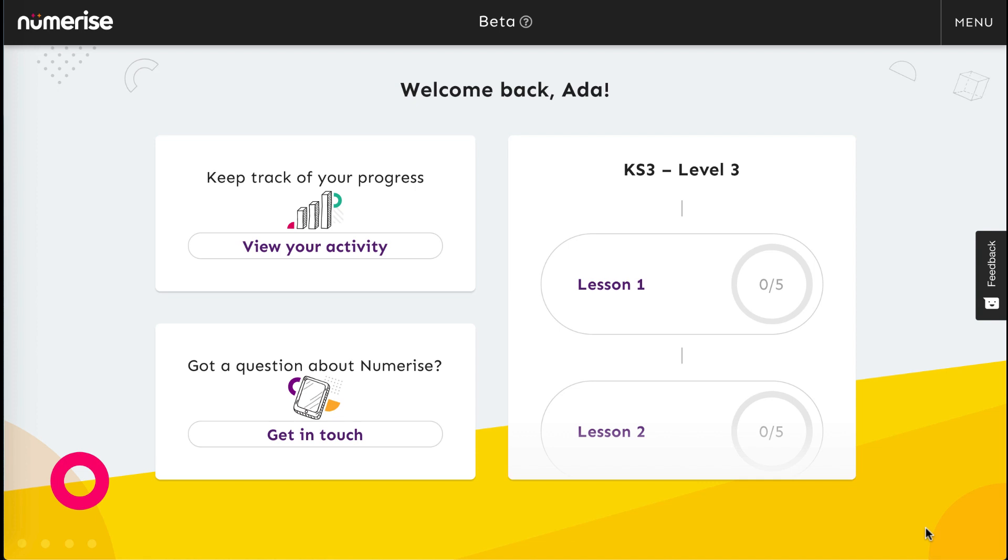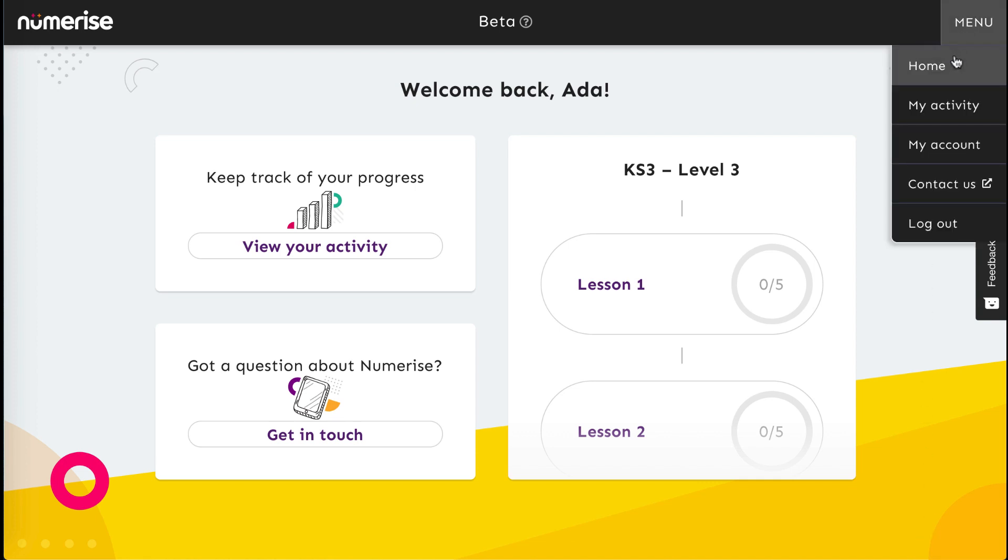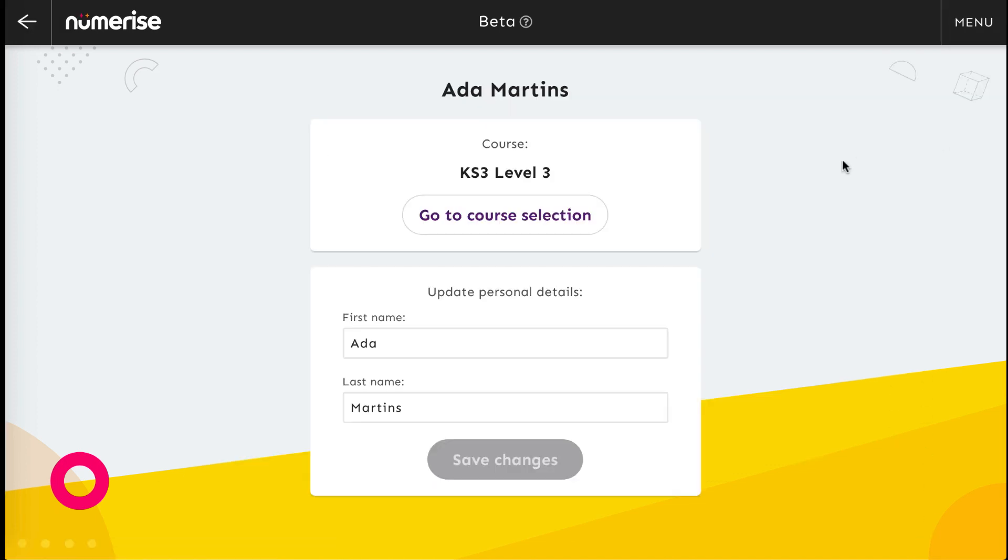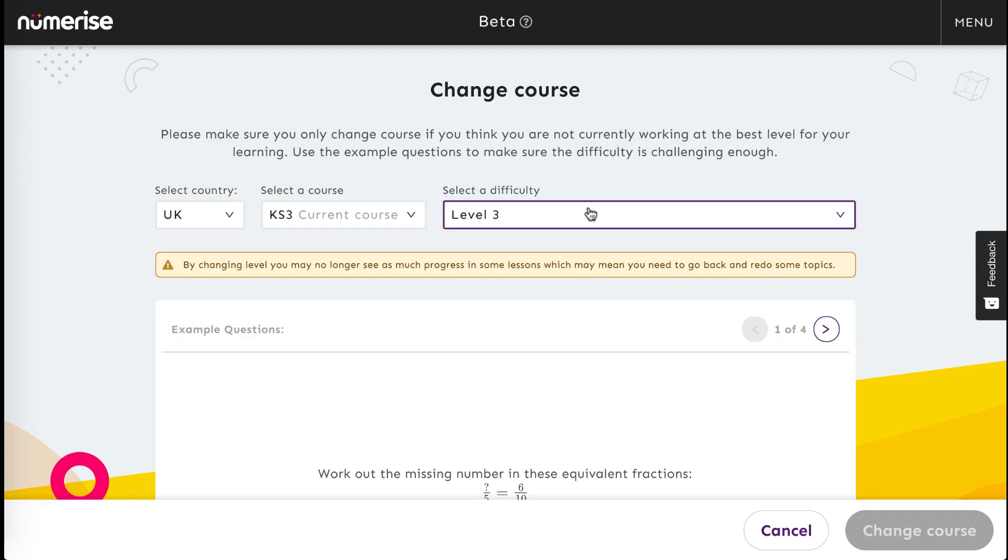If you are still struggling after a while, you can change level easily by going to My Account in the drop-down menu and going to Course Selection.